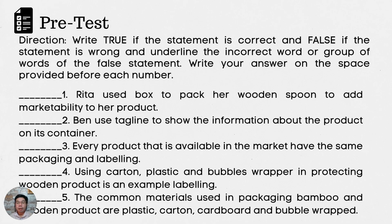Number 1. Rita used a box to pack her wooden spoon to add marketability to her product. 2. Ben used a tagline to show the information about the product on its container. 3. Every product that is available in the market has the same packaging and labeling. 4. Using carton, plastic, and bubble wrapper in protecting a wooden product is an example of labeling. 5. The common materials used in packaging bamboo and wooden products are plastic, carton, cardboard, and bubble wrap.